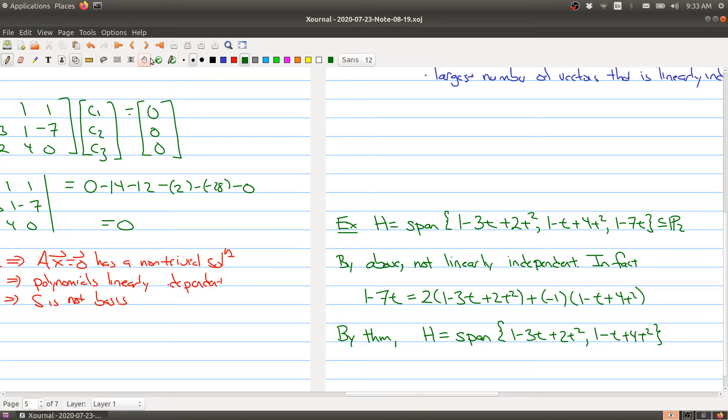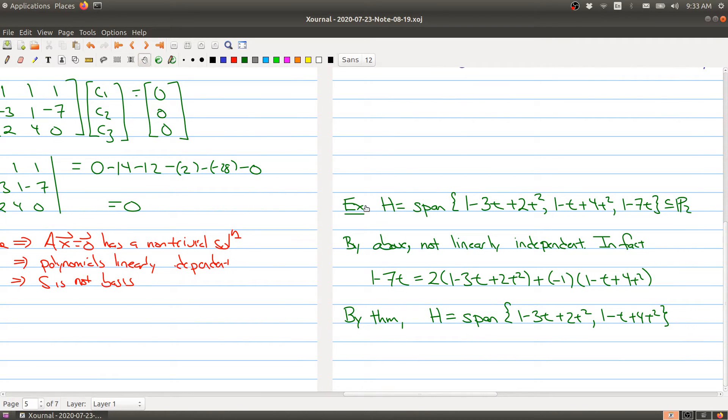Actually we can go a little bit further. Since 1 minus t plus 4t squared is not a multiple of 1 minus 3t plus 2t squared, that should be clear.